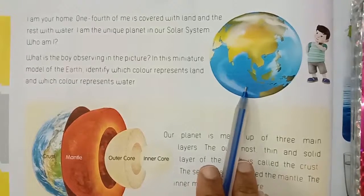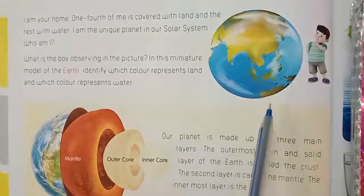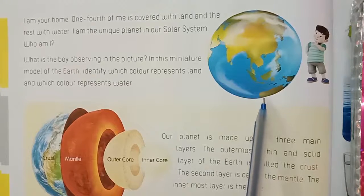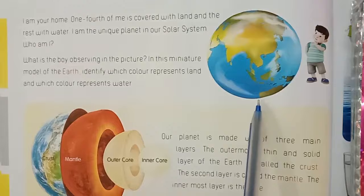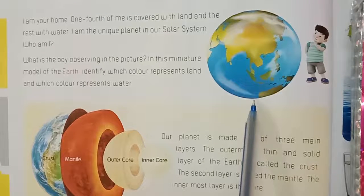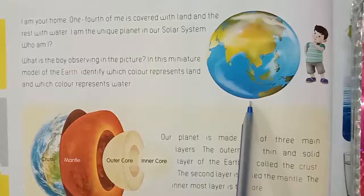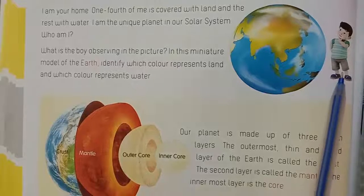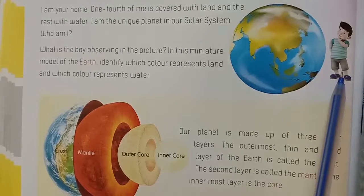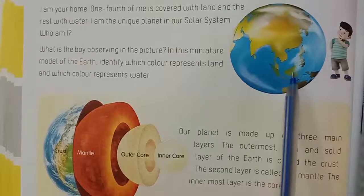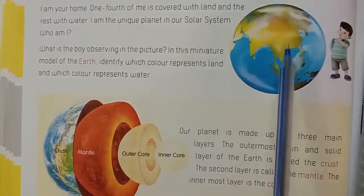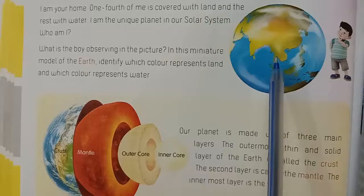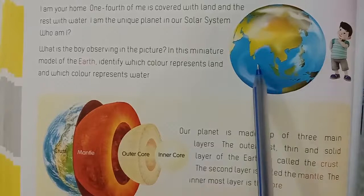Children, look at this picture. What is this picture? This is the Earth. Earth says: I am your home. One fourth of me is covered with land and the rest with water. I am the unique planet in our solar system. Who am I? Earth. What is the boy observing? A miniature model of the Earth. Green and brown color represents land; blue color represents water.